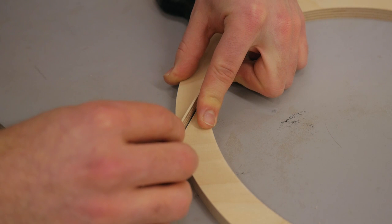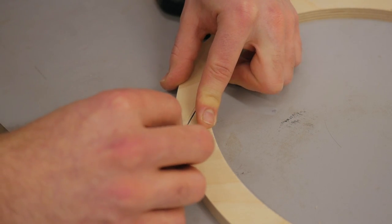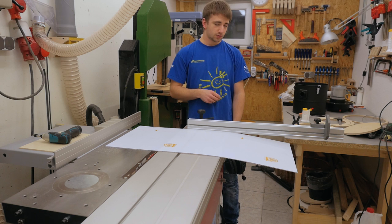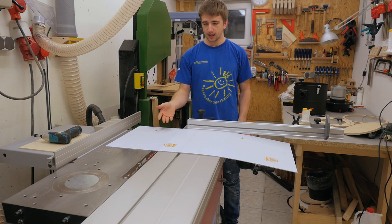Therefore I cut a little strip that has the width of the bandsaw kerf, and I need to glue that in. Now while the glue is drying I can cut the sheet of polycarbonate to size.